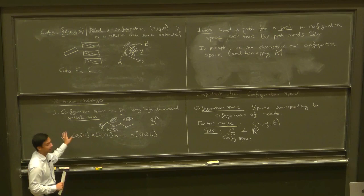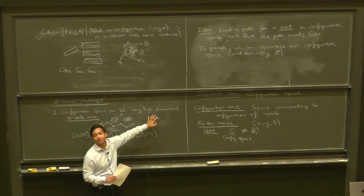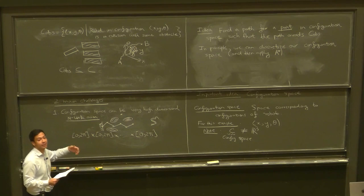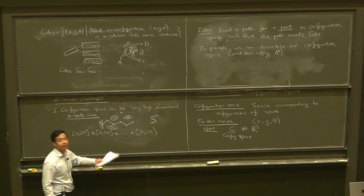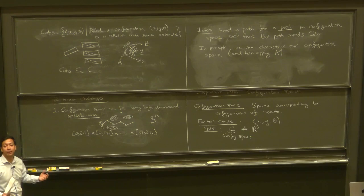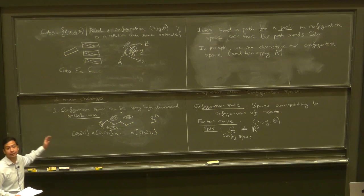The point is this can be pretty high-dimensional. If you have a seven-link arm, the configuration space has dimension seven, and in general N dimensions for an N-link arm. That's the first challenge: if you want to discretize this space, you have the curse of dimensionality — the number of points in your discretized graph search problem is exponential in the dimension of the configuration space, giving a gigantic graph search problem that's not feasible to solve in practice.